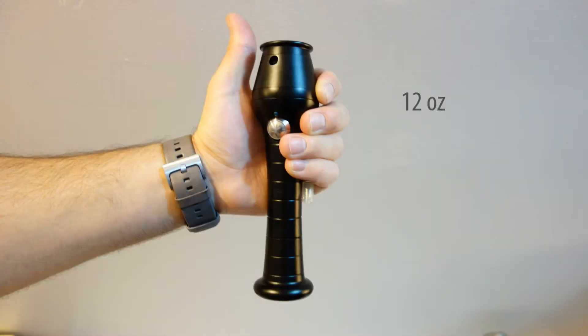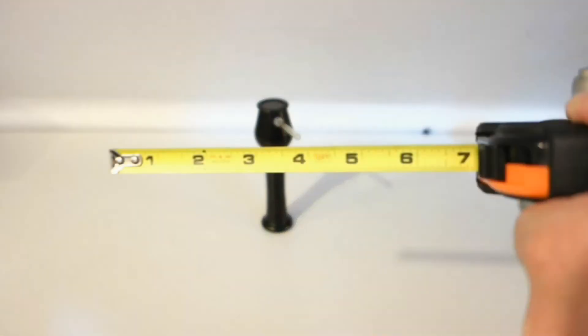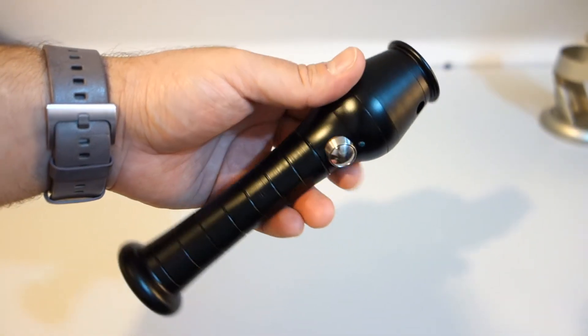Weighing in at roughly 12 ounces, it's about twice as heavy as the Da Vinci Ascent and also slightly taller measuring in at 7 inches tall. But the extra weight is to be expected when dealing with an all metal body and because of its balanced weight, it isn't uncomfortable to hold in the hand.